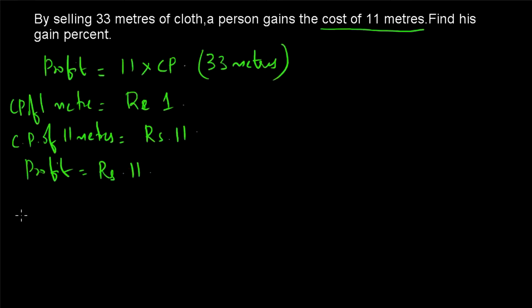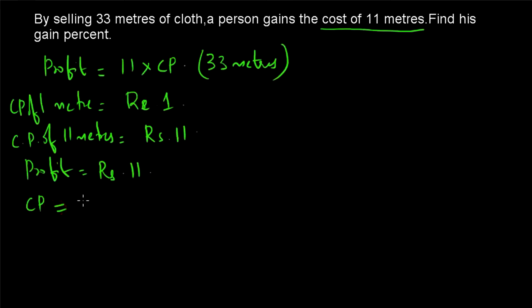Now we need to find the cost price of 33 meters in order to get the gain percentage. When selling 33 meters, the corresponding profit is ₹11. So what is the corresponding cost price? Cost price equals ₹1 into 33, that is ₹33.